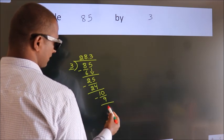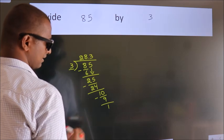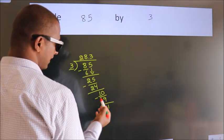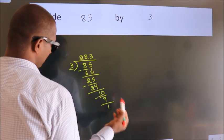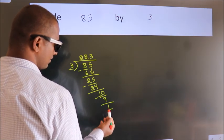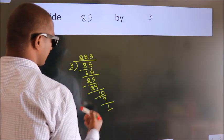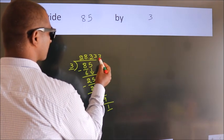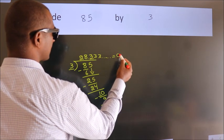Now we subtract and get 1. Now you observe, we had 1 here and we got 1 again. That means this number keeps on repeating. So this is our quotient.